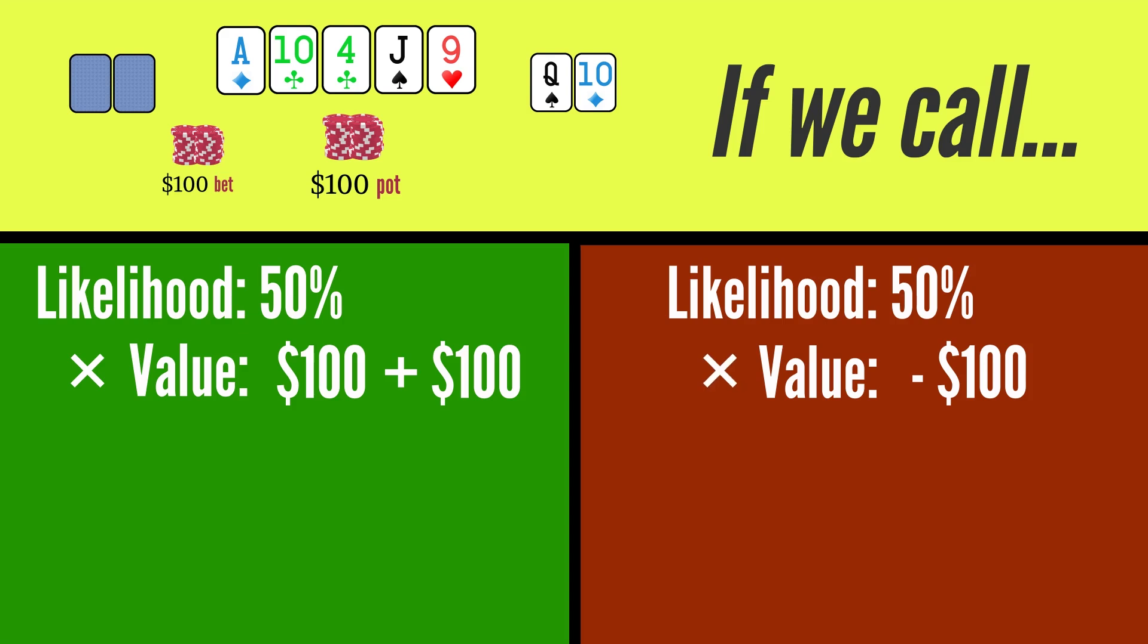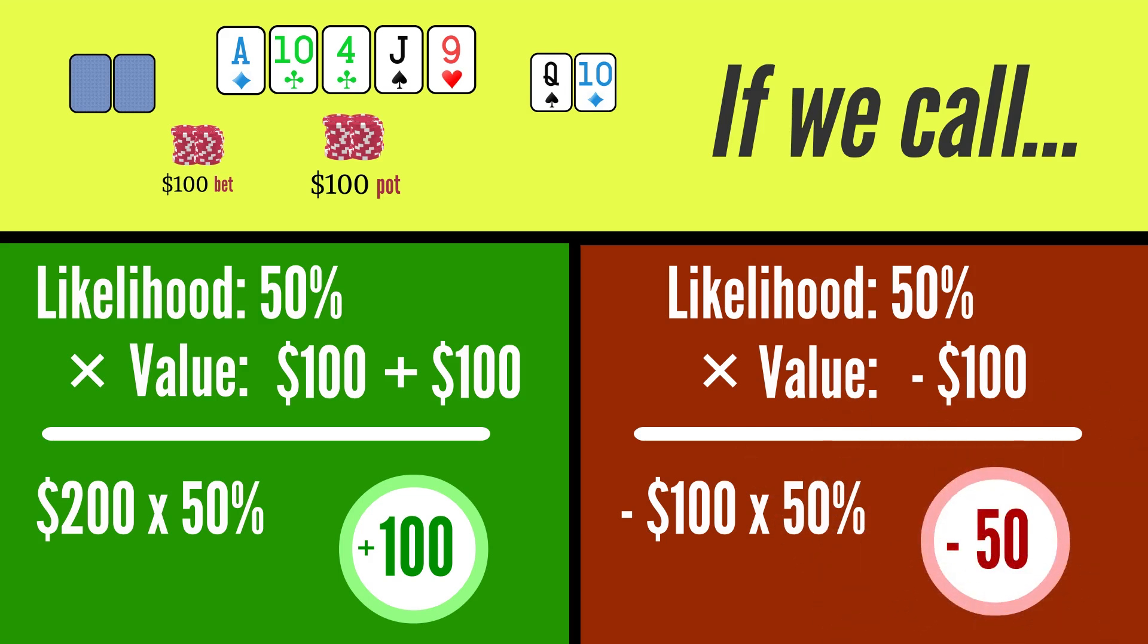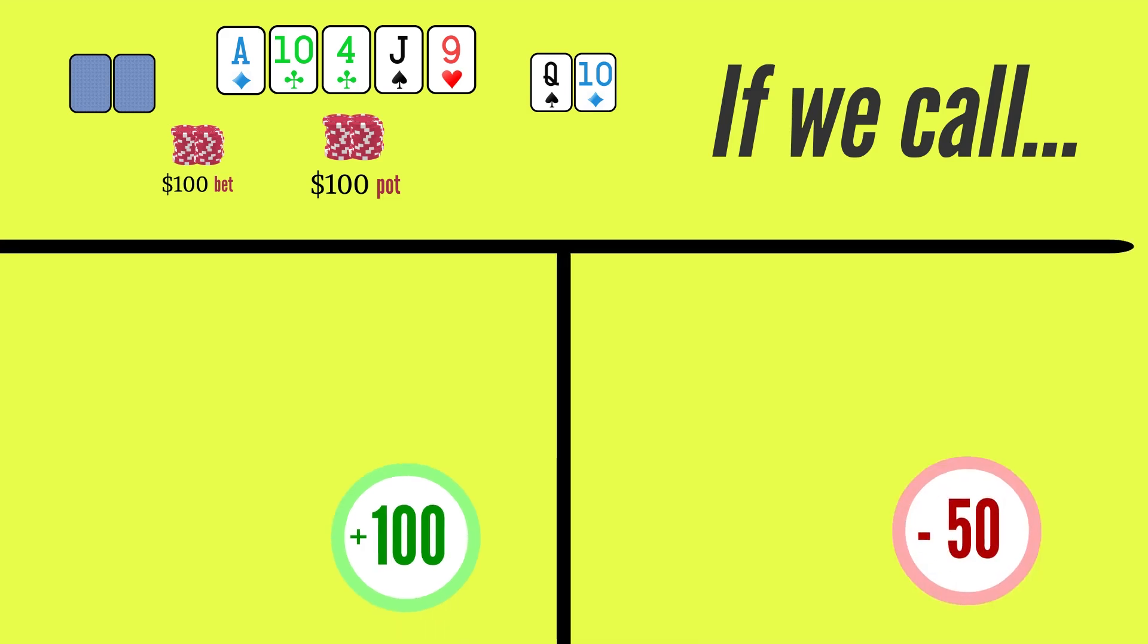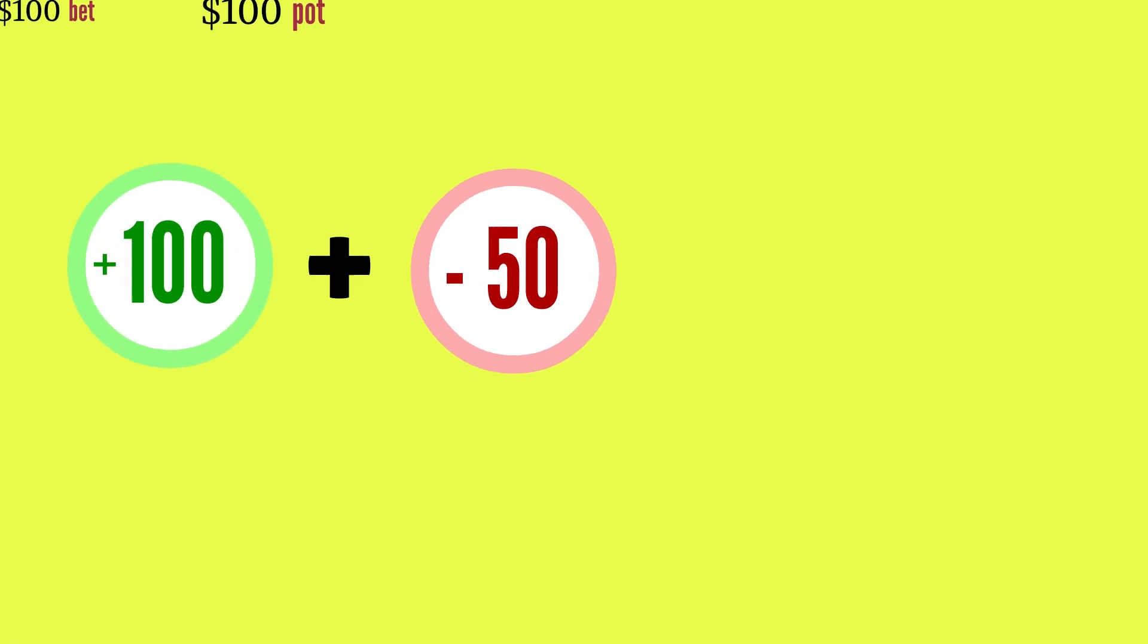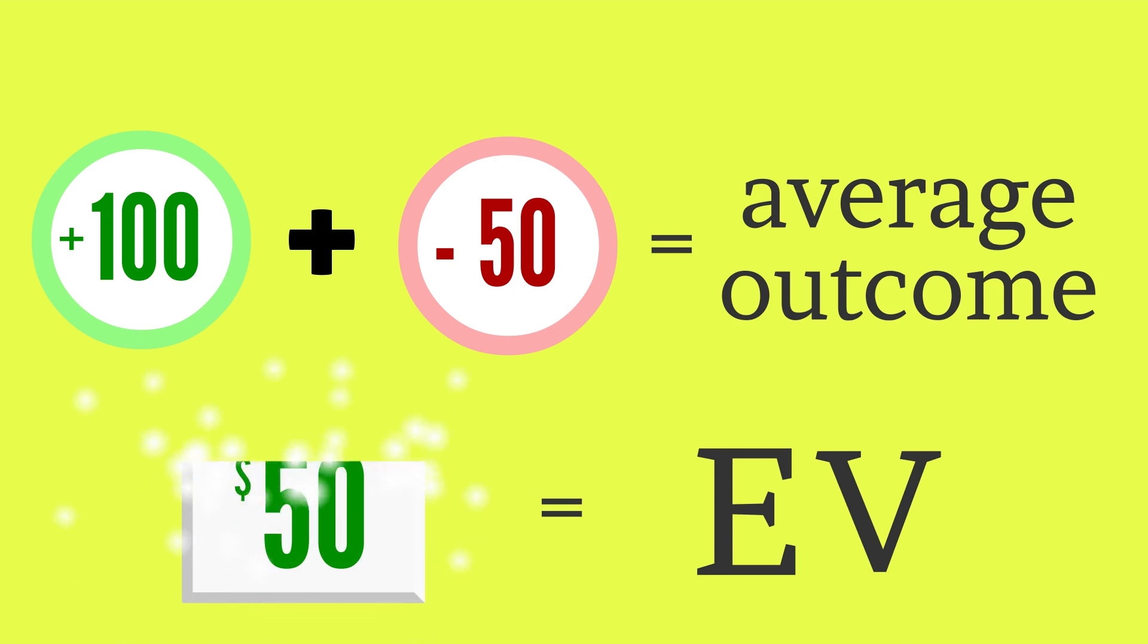Now multiply those values by their likelihood to occur. If we win, it's two hundred dollars 50% of the time, or plus a hundred. If we lose, it's a hundred dollars 50% of the time, or minus fifty. Finally, add the two together to create the average outcome. This is the value we expect, and we get an EV of plus fifty dollars.